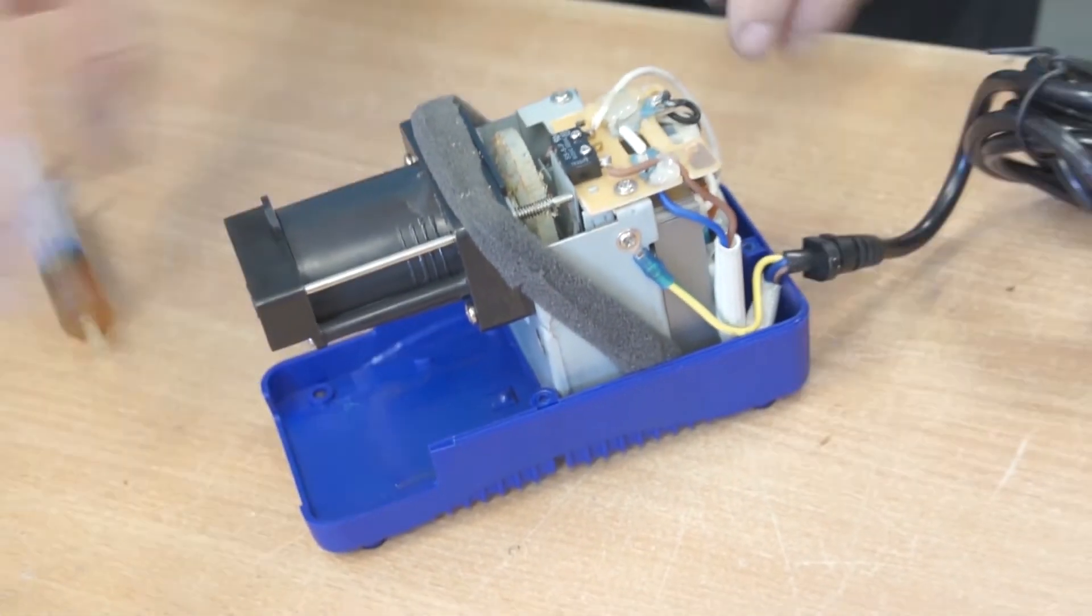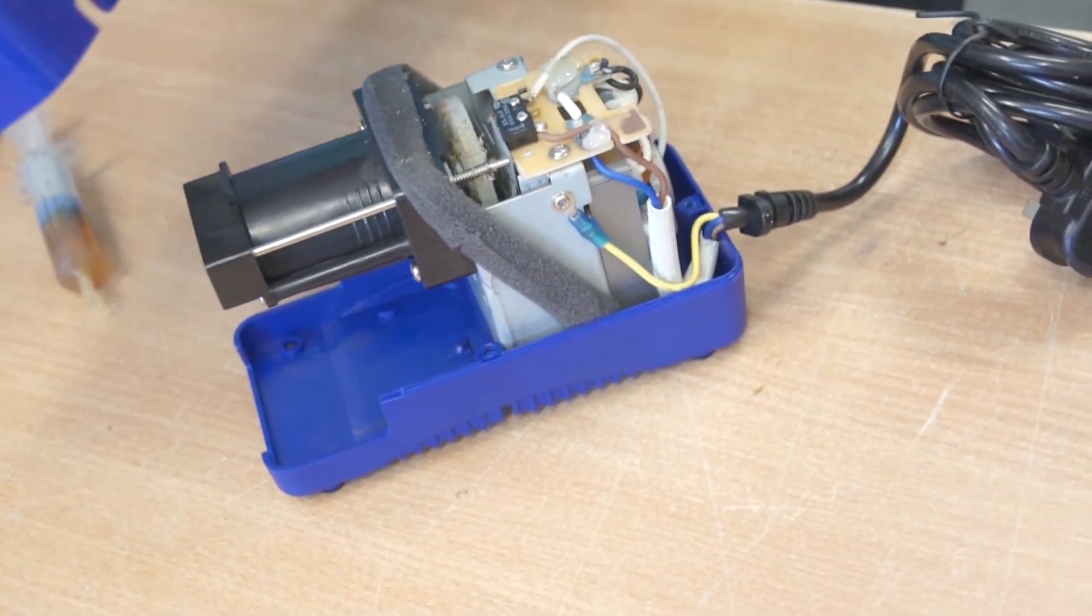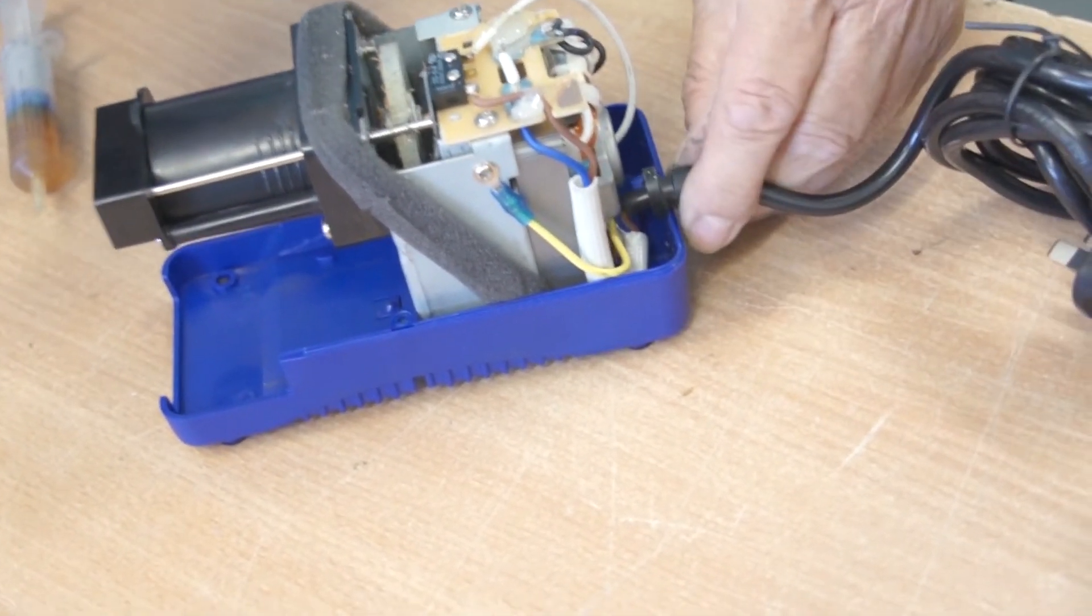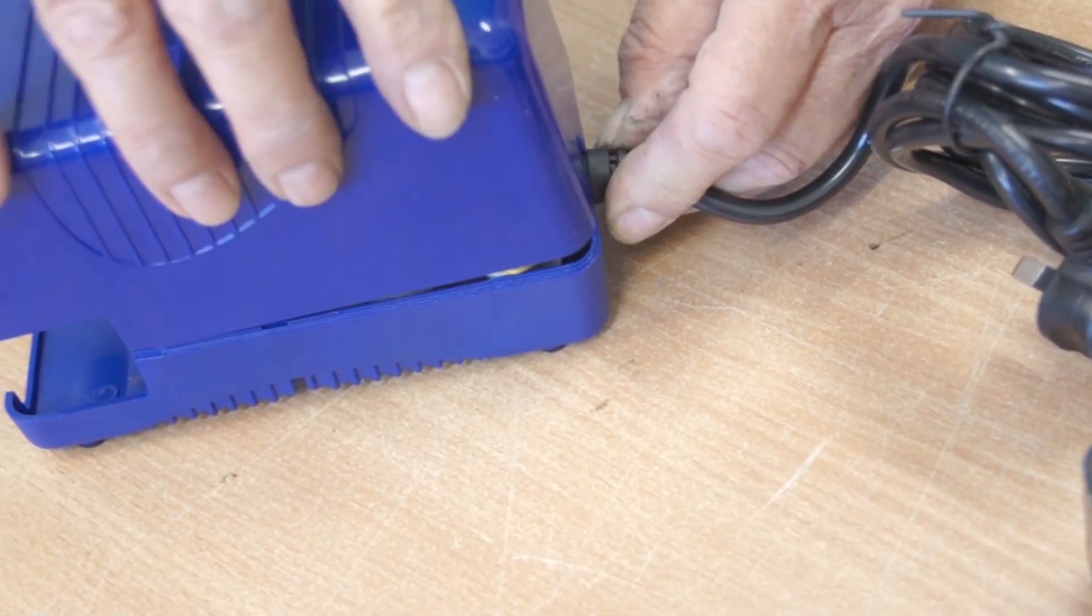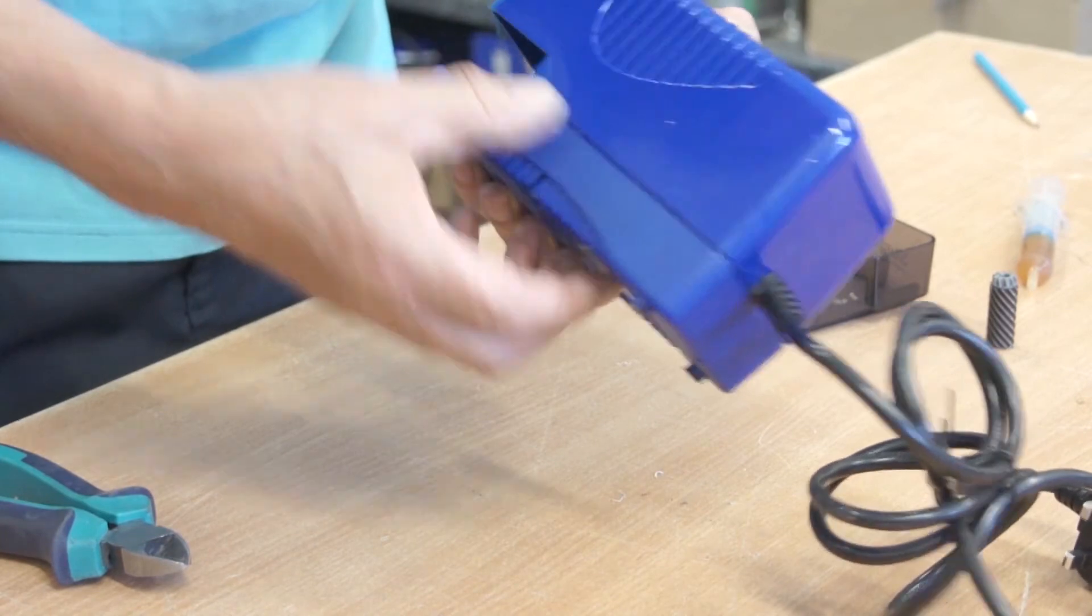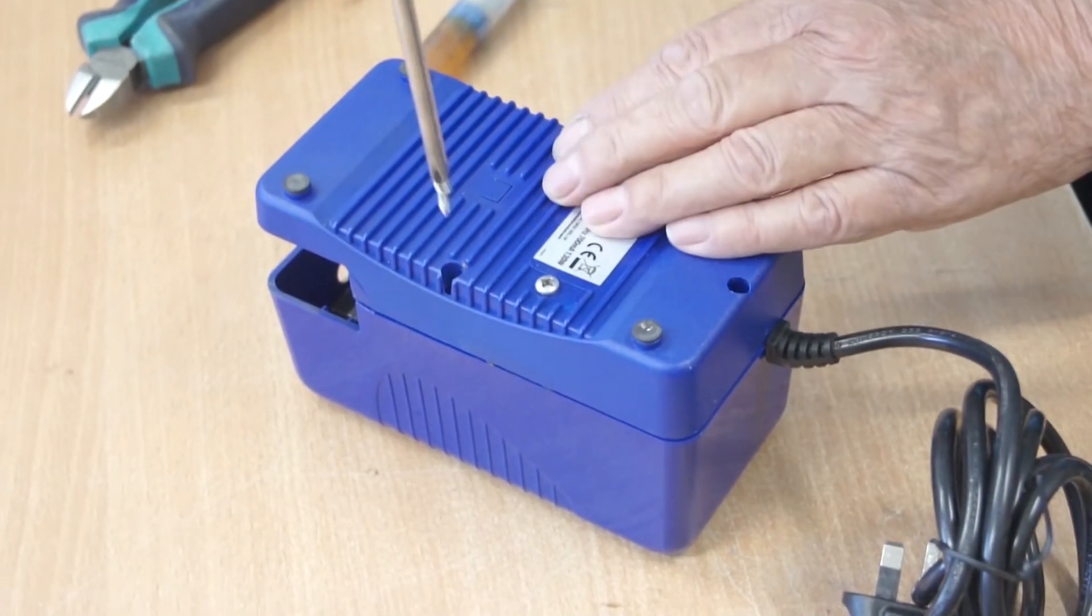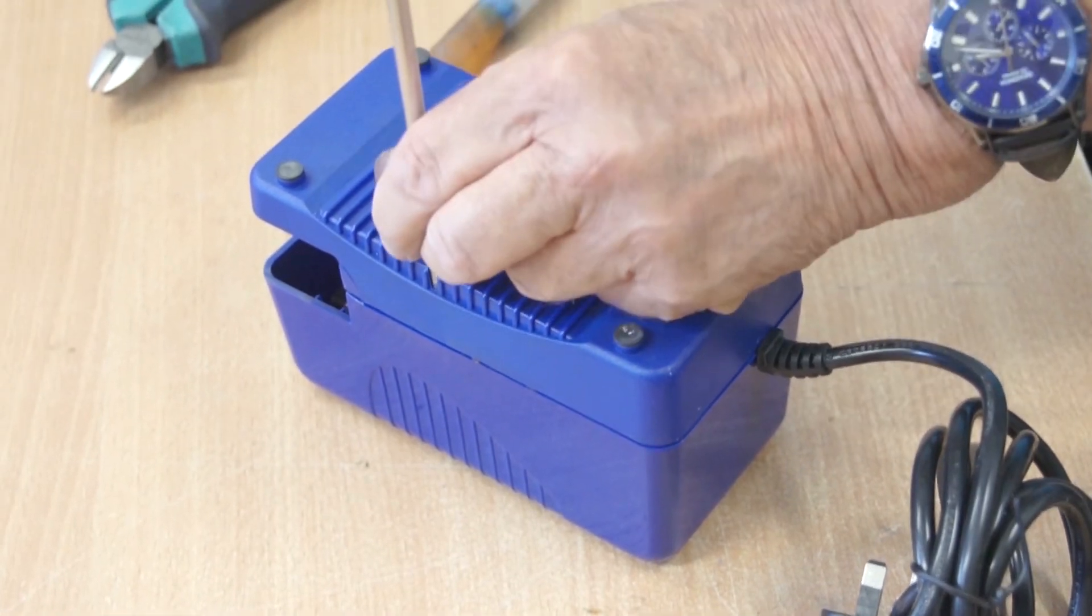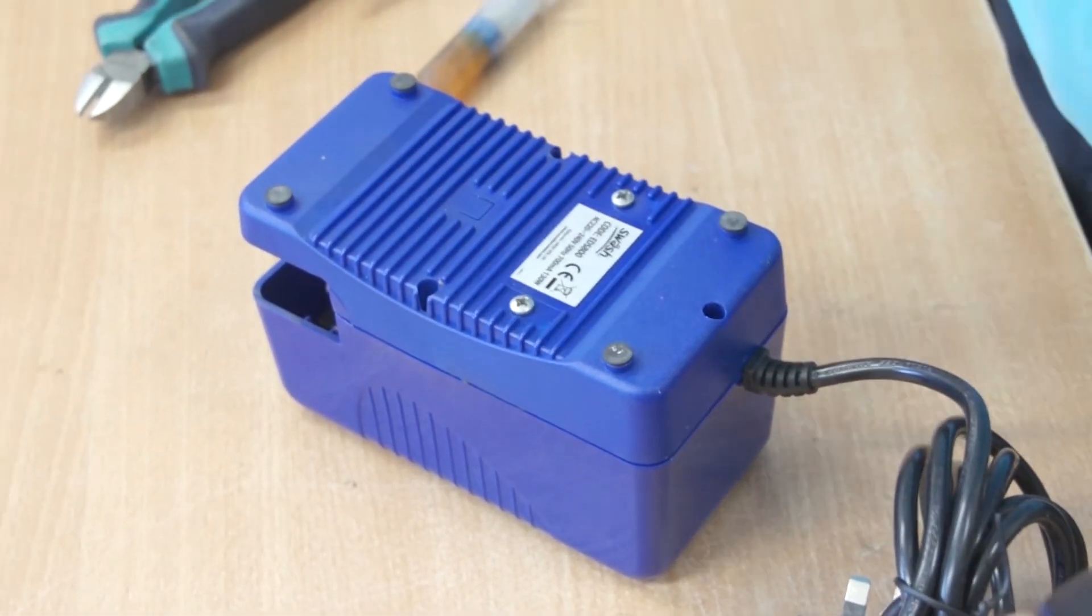Turn the machine over again and we will replace the case. When we replace the case, that engages over the top of the mains cable. Like that. It is down all round, nothing pinched and then drop the screws in one at a time and I must stress, do not over tighten them.